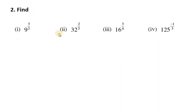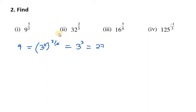Now the next question: 9 raised to the power 3 over 2. We write 9 as 3 squared, and with the exponent 3 over 2, the 2s cancel out leaving us with 3 raised to power 3, which equals 27.